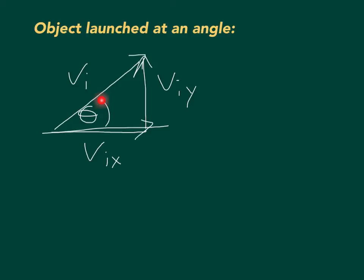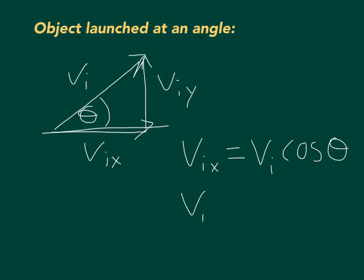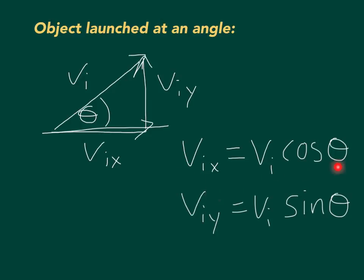So what we're going to have to do is use trigonometry, because we are going to need V initial x and V initial y. V initial x equals V initial cosine theta, because V initial x is adjacent to the angle. And V initial y equals V initial sine theta, because V initial y is opposite the angle. So when we use the same kind of formulas as before, we're going to have to make these substitutions — usually you'll figure these numbers out before finishing the problem.